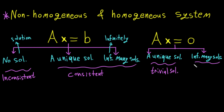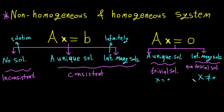The infinitely many solutions case is called the non-trivial solution. For the trivial solution, this means x equals zero. For the non-trivial solution, x is not equal to zero — because infinitely many solutions end with an arbitrary constant, so x cannot be zero.